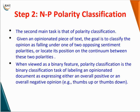The next step is negative-positive polarity calculation. Step 2 is polarity classification. Given an opinionated piece of text, the goal is to classify the opinion as falling under one of two opposing sentiment polarities, or to locate its position on a continuum — that is, a range or scale — between two polarities. In step 2, we try to classify opinions as positive or negative, or locate their position on the scale between the two polarities.